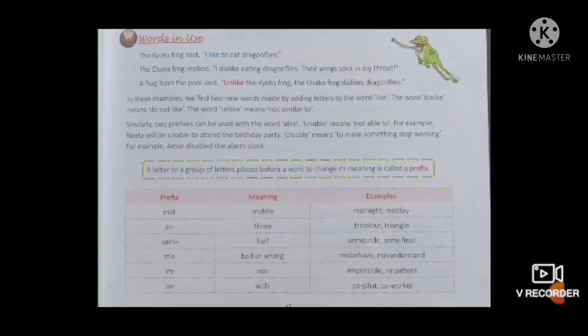The Kyoto frog said, 'I like dragonflies.' So, the Osaka frog replied, 'I dislike eating dragonflies. Their wings stick in my throat.' So Osaka frog is saying: I don't like dragonflies. Dislike means I don't like to eat dragonflies - it's opposite of like.